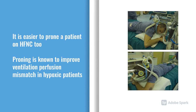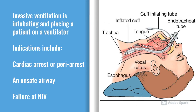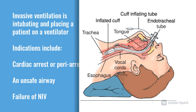Next is invasive ventilation. This is when you put a tracheal tube in, sedate someone, and ventilate them via a machine. You can do exactly the same as with non-invasive support, but with more finesse and fine-tuning on a ventilator than you can with the BiPAP or CPAP machine.